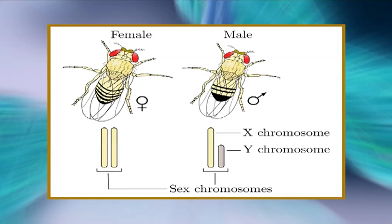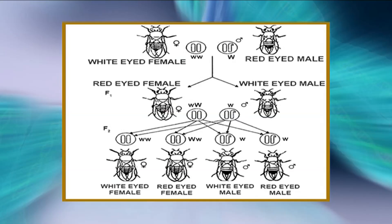Morgan concluded this was due to X-linkage of white-eye color in Drosophila. Since females have two X chromosomes, the recessive allele will be masked by the dominant allele. Males have only one copy of each allele on their X chromosome, so there is no allele to mask the effect — males will exhibit both red and white eye colors, whereas females will exhibit only the dominant trait. However, a female can also exhibit a recessive trait if she has the recessive allele on both X chromosomes. We conclude that males are more often affected by sex-linked disorders than females.